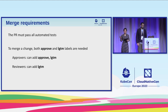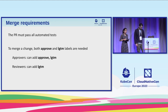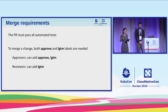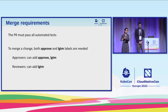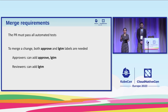In order to merge a particular PR, you have to go through a code review process. The PR must pass all the automated tests — unit tests, integration tests, and end-to-end tests. These tests ensure that the code is functioning and is not introducing any regressions. In addition to that, you have to get an approve and LGTM label, to ensure that multiple SIG stakeholders take a look at the code and provide their seal of approval.